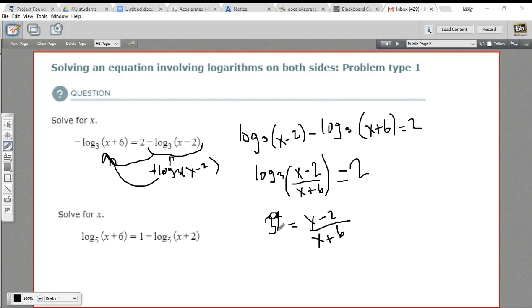So this over here is really 9. And if we want to solve for x, we can multiply both sides by x+6. And over here, that will cancel, getting rid of the fraction, which is great. Here we need to distribute the 9. So we get 9x + 54 = x - 2.